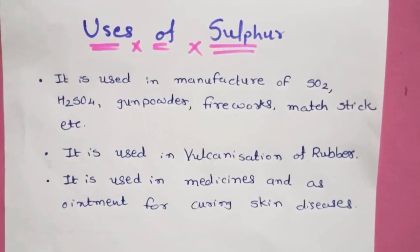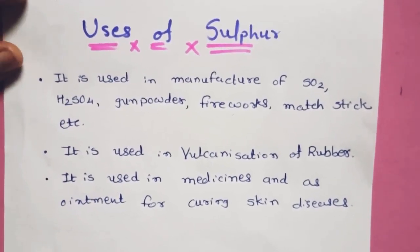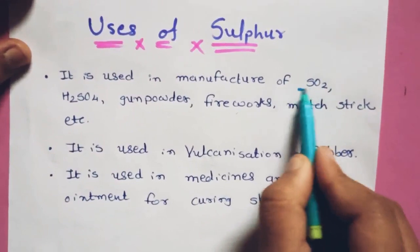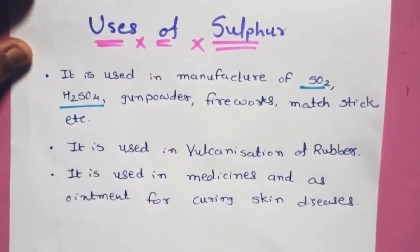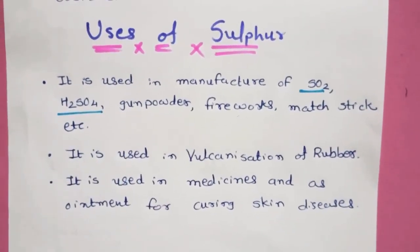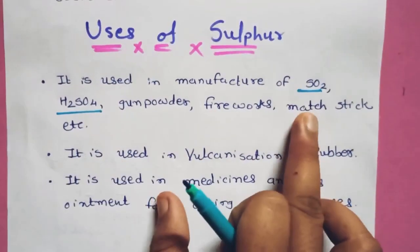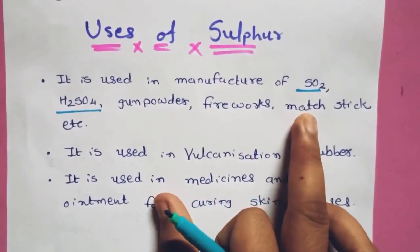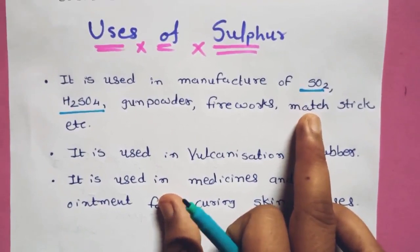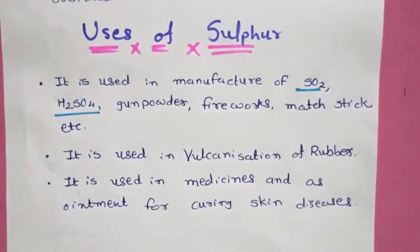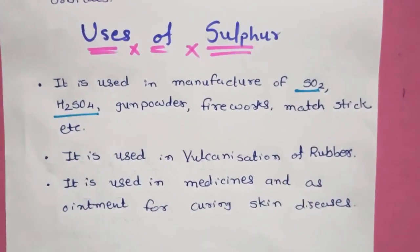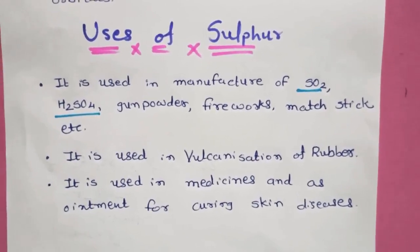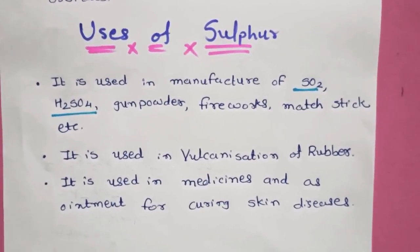In the next lecture, we are going to discuss sulfur dioxide and sulfuric acid in detail — these are the two main compounds. We will study them in the next video. Thank you for watching. If you have any doubts, drop a message in the comment box.